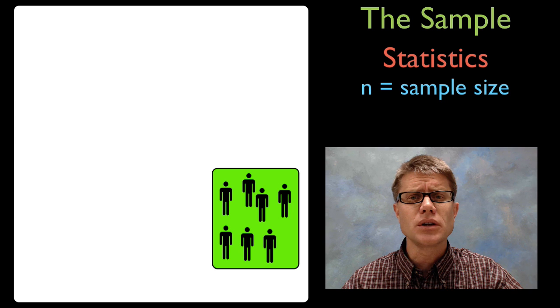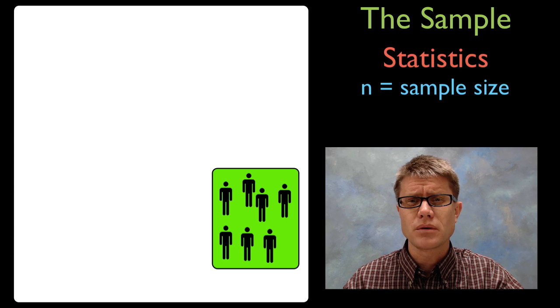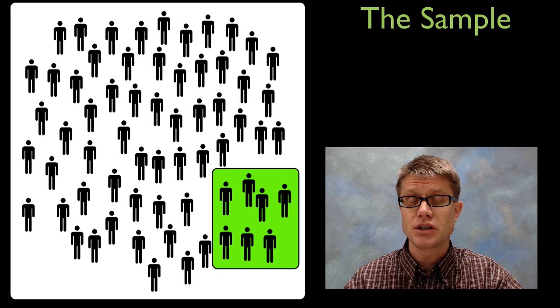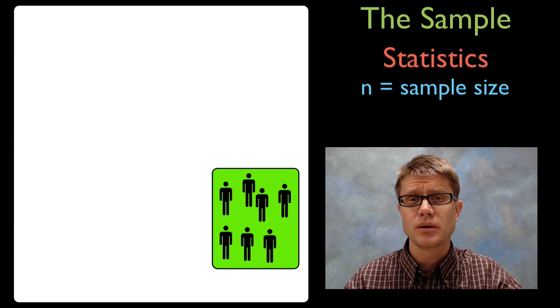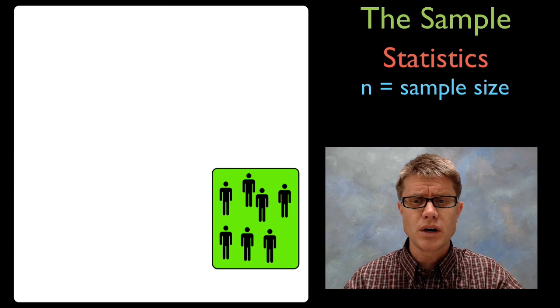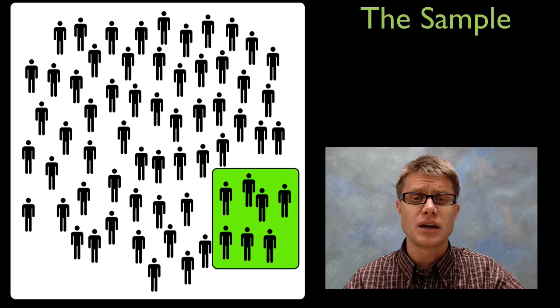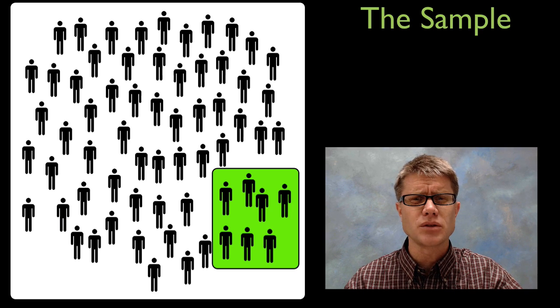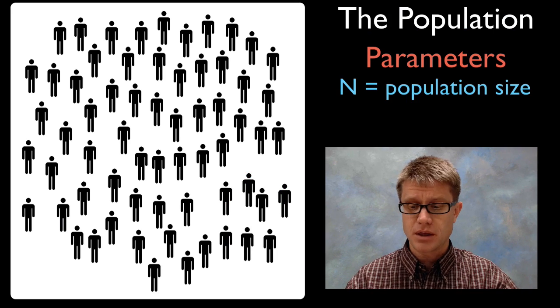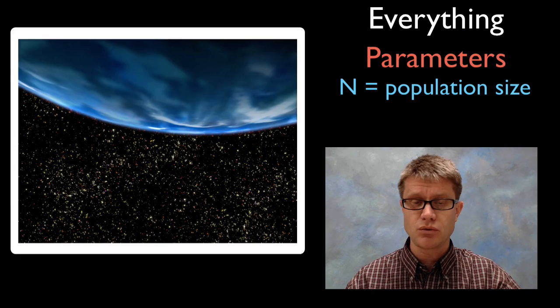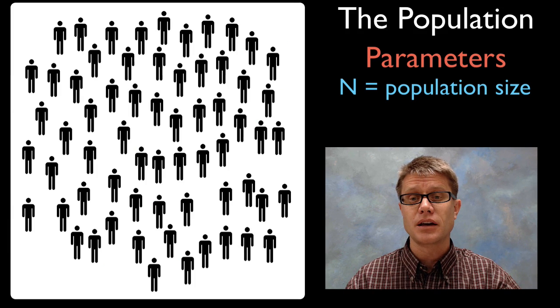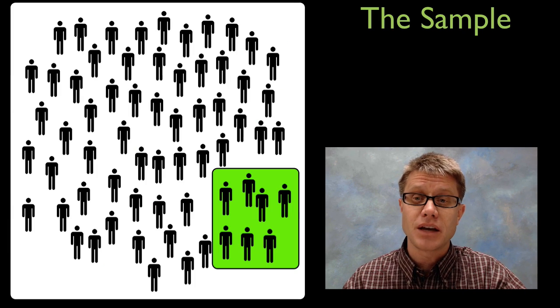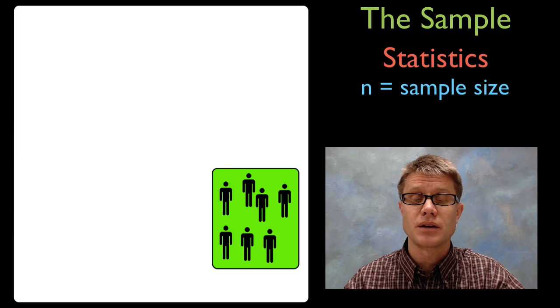A really good question at this point might be which is more important? Is the population important or is the sample important? In other words which one do we use more? I used to think the population has to be the most important thing. We want to know everything, we want to know all the outcomes, we want to know what the universe looks like. And in fact it's the wrong answer.